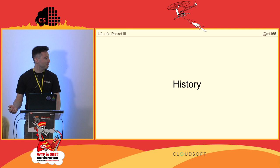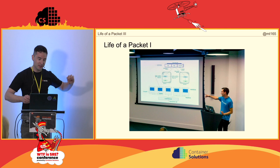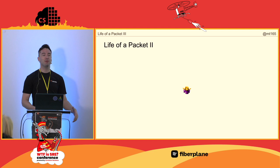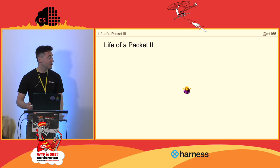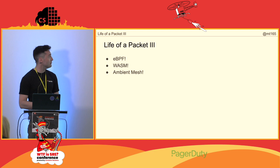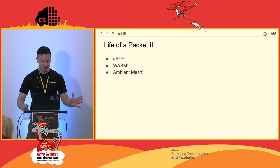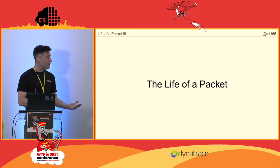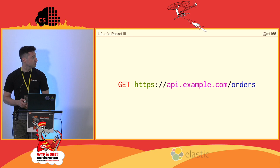This is called Life of the Packet 3, because I did Life of the Packet 1 back in 2017 — an explainer of how Istio worked back in the 0.2 days. Life of the Packet 2 didn't happen because of COVID. There were a couple of major architectural changes in Istio that probably would have prompted it. So this one is now up to date with the latest developments, including all the buzzwords you want to hear about: eBPF, WASM, and ambient mesh.